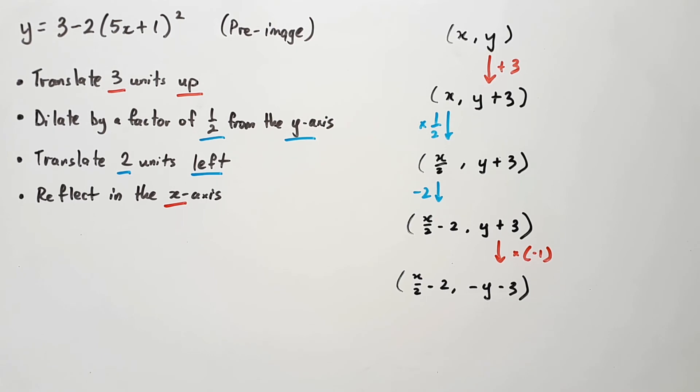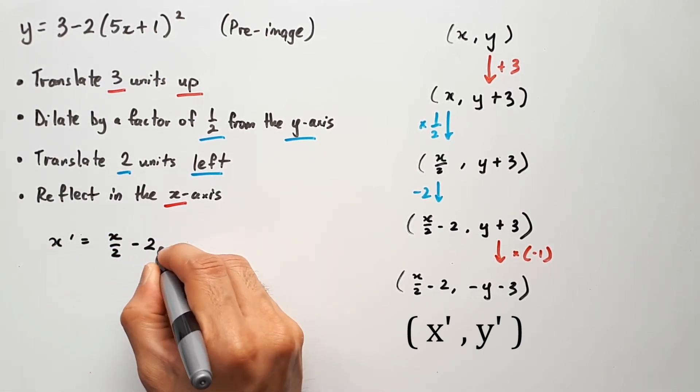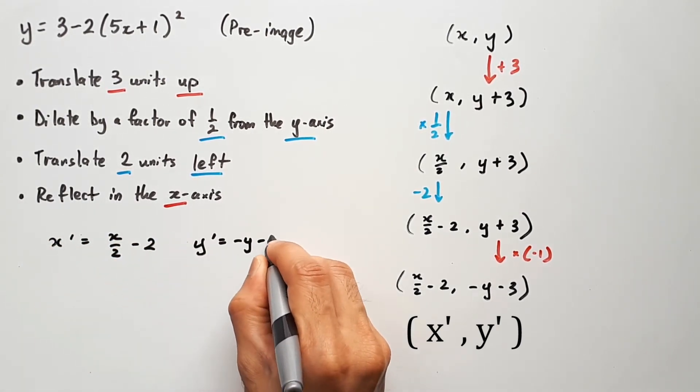Once again, this is comparable to its generic image coordinate (x', y'), so we can establish two equations where x' equals x/2 - 2, and y' equals -y - 3.